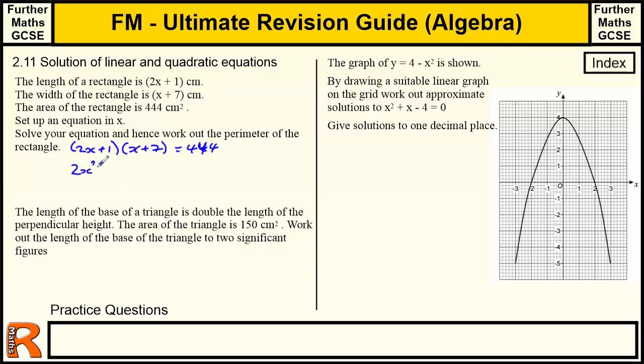So we get 2x squared plus x plus 14x is plus 15x. Then we need to add the 7. And that's equal to the 444. Take this over to here. So we get 2x squared plus 15x minus 437 equals 0.